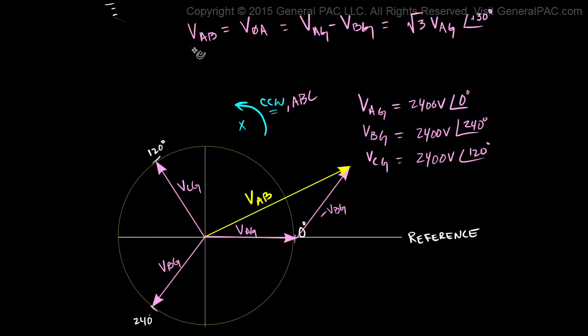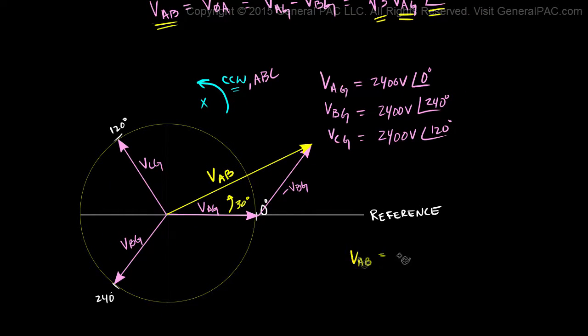Okay, so in Part 6B, we concluded that VAB, which is this voltage phasor here, is equal to VAG, which is this voltage phasor here, rotated by 30 degrees and then multiplied by the square root of 3. That's going to equal VAB. So let me write that down here. VAB equals square root of 3 times VAG, rotated by 30 degrees.